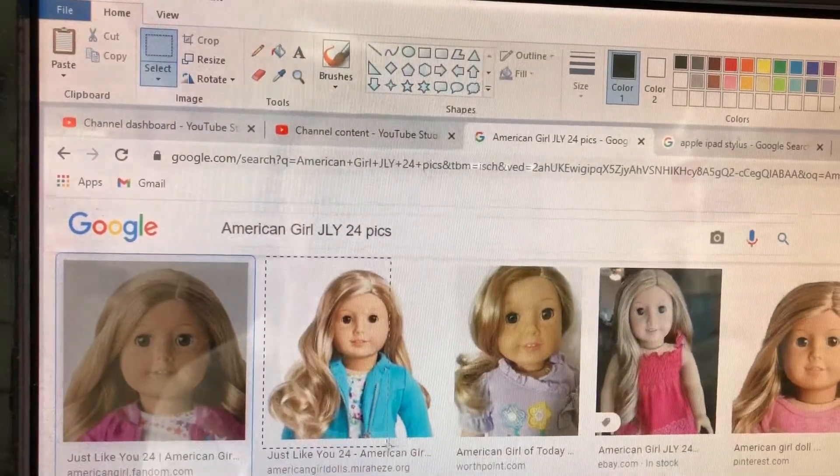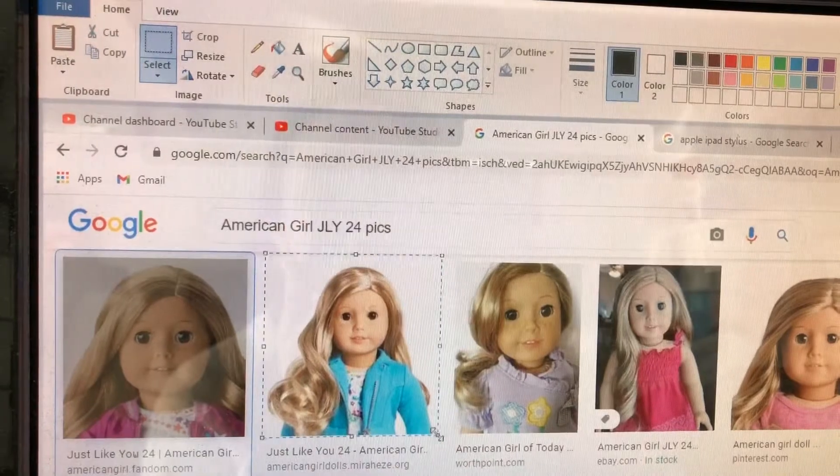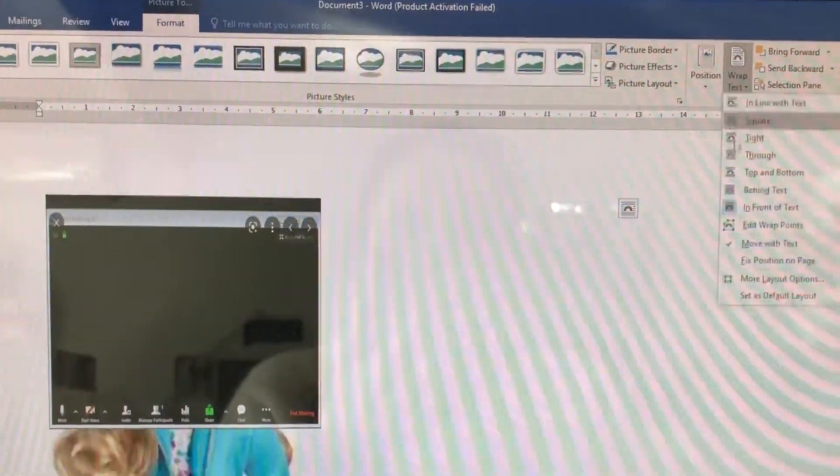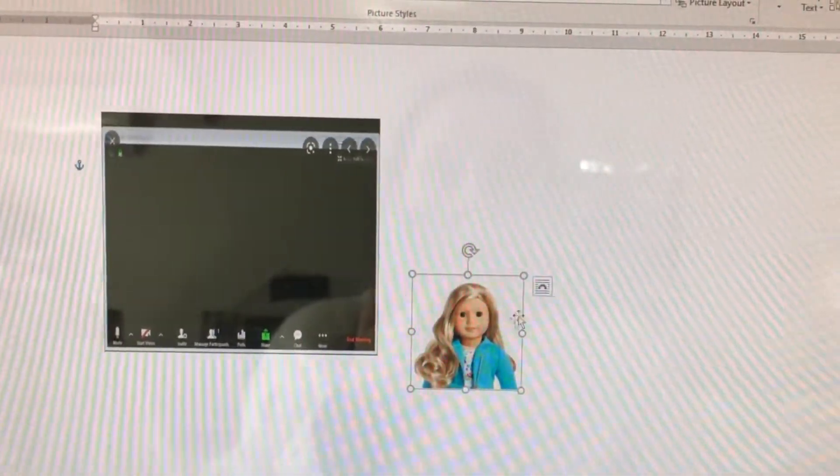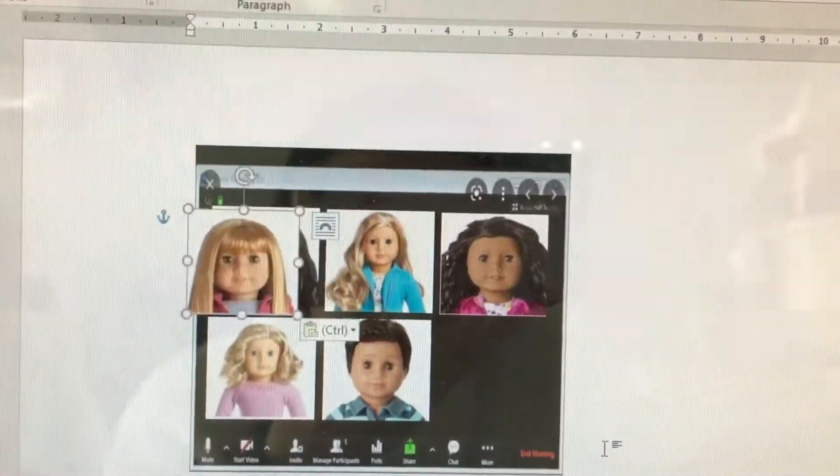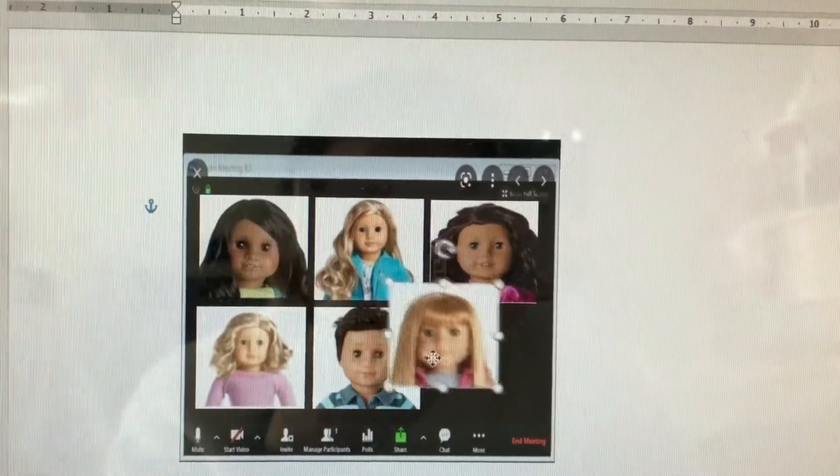For participants, we Googled images of our AG dolls. Take a screenshot and drop into MS Paint. Crop the image to have just the headshot, then copy it over to your blank Zoom screen. Resize the image to fit as many dolls on screen as you'd like. We chose to do six.